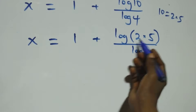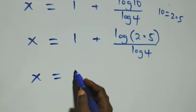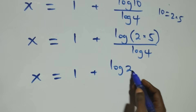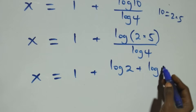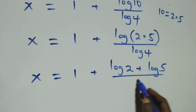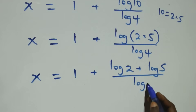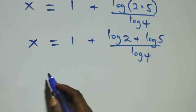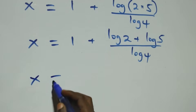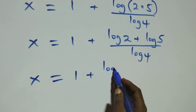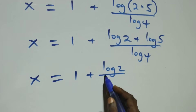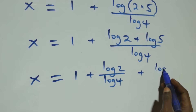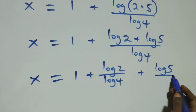Applying the product rule of logarithms to log 10 — since 10 equals 2 times 5 — we get x equals 1 plus (log 2 plus log 5) over log 4. We then separate this into two fractions: x equals 1 plus log 2 over log 4, plus log 5 over log 4.